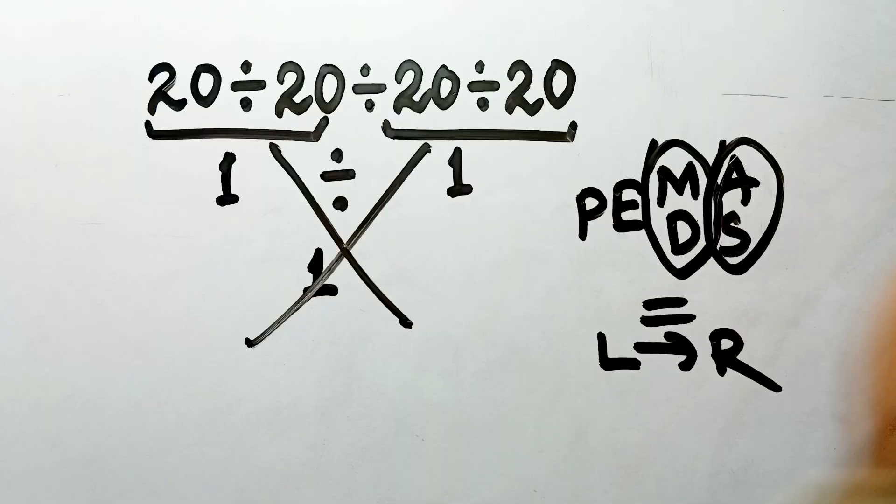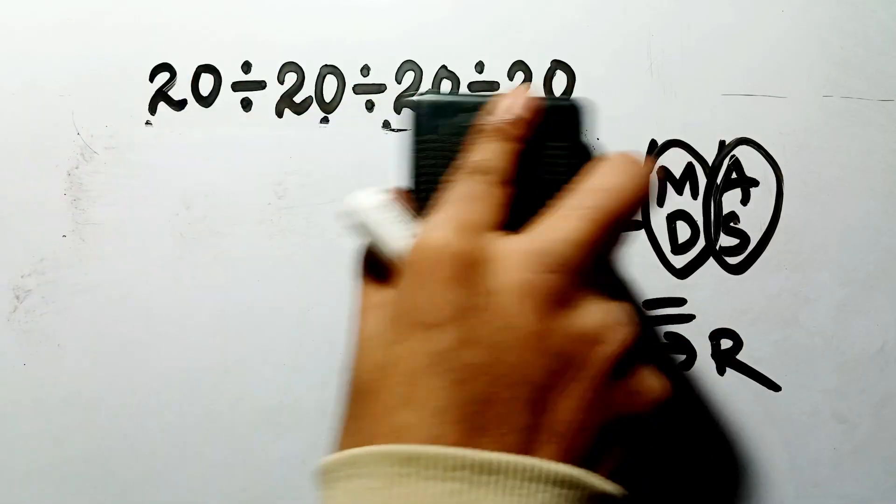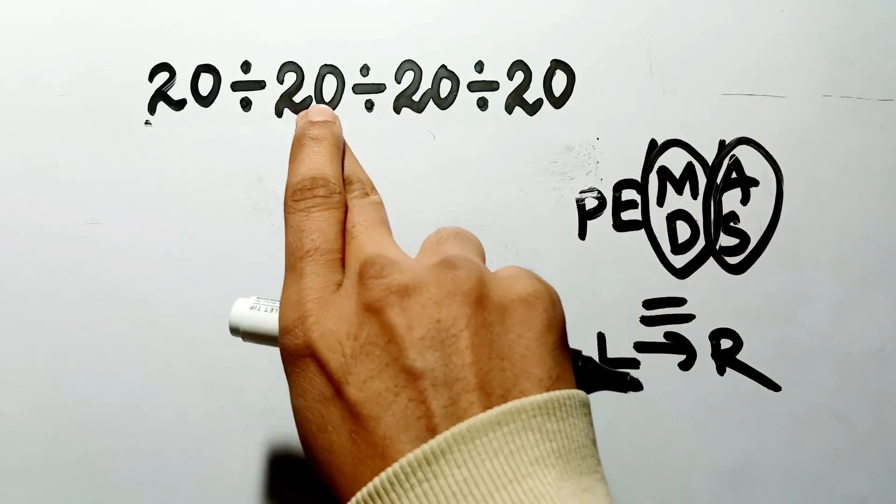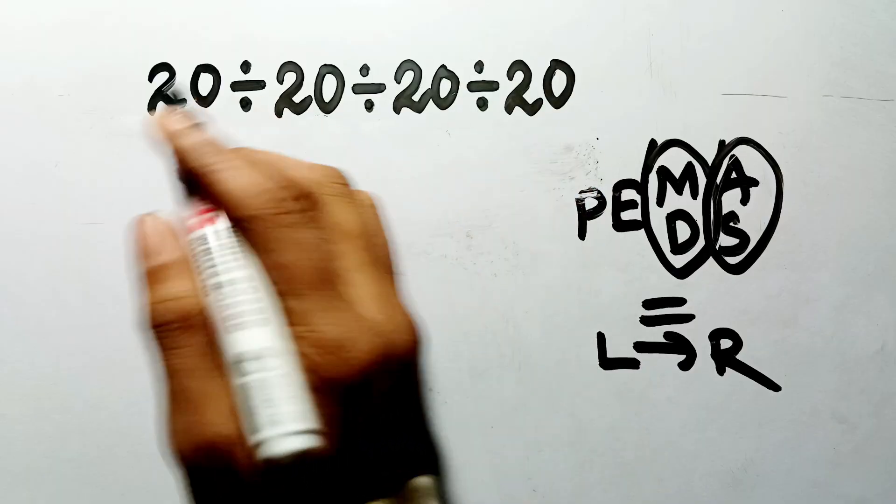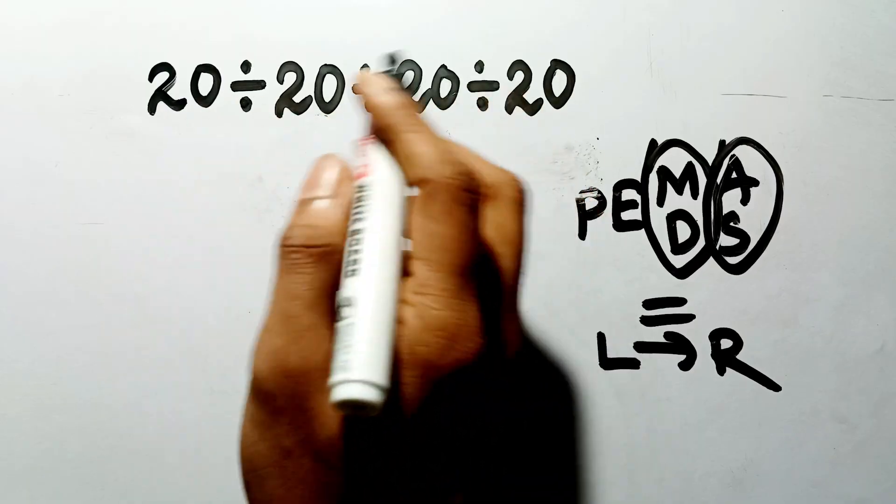In this expression, we have three division signs back-to-back, and absolutely no parentheses to guide us. Here, we have a massive psychological trap, because in mathematics, when we see identical numbers repeated with the same sign, we instinctively want to group them into pairs.